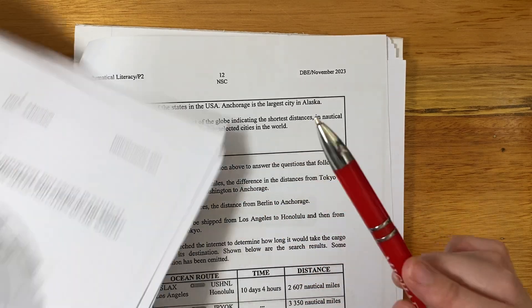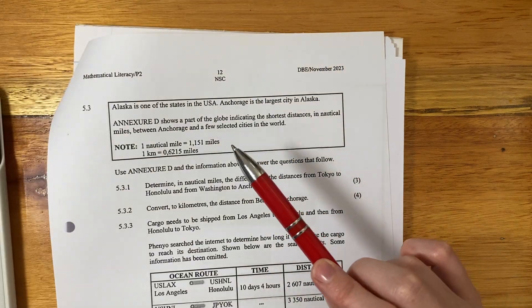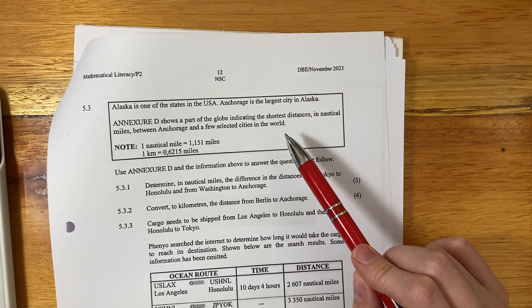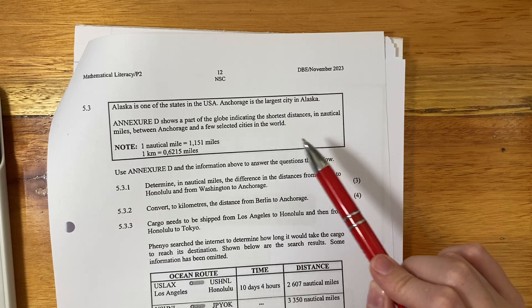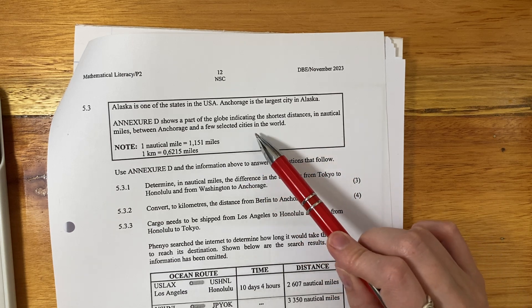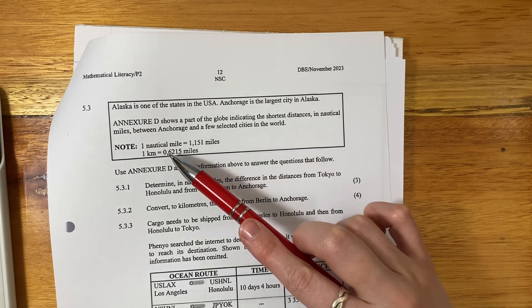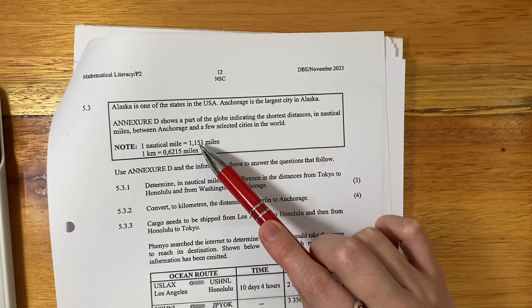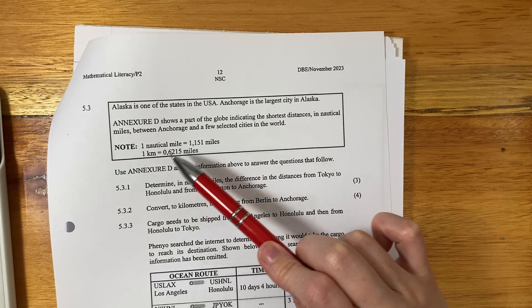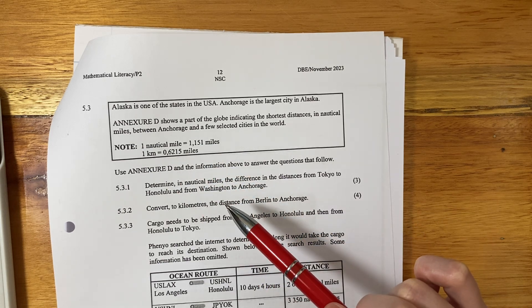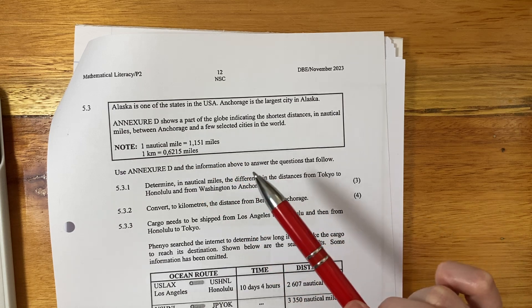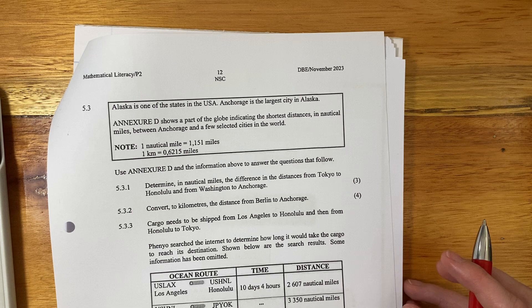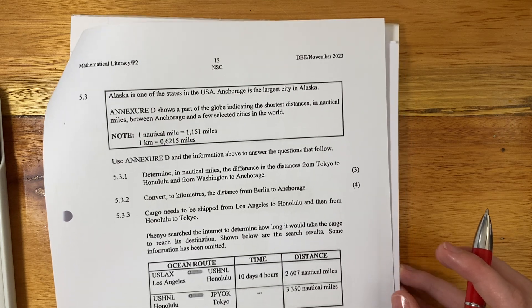I have my annexure here, right? It's got a big globe on it. It shows a part of the globe indicating the shortest distances in nautical miles between Anchorage and a few selected cities in the world. So a nautical mile is larger than a mile. A kilometer is smaller than a mile. So we're probably going to have to do some conversions. We need to keep our wits about us and make sure that we answer these and read these questions correctly.